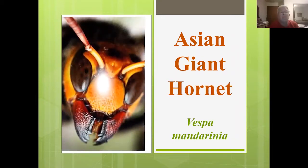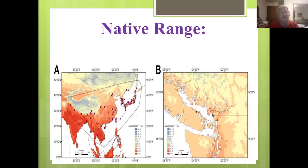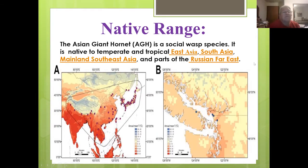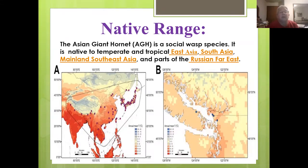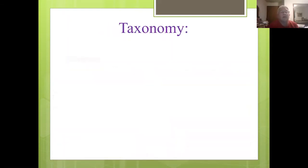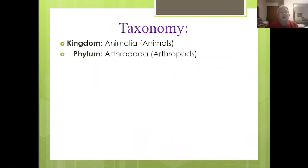The Asian giant hornet, or Vespa mandarinia. The native range for these wasps — and they are a social wasp like our bees and others — is in Eastern Asia, Southeast Asia, and mainland Southeast Asia. Taxonomy: they belong to the animal kingdom, the phylum Arthropoda.